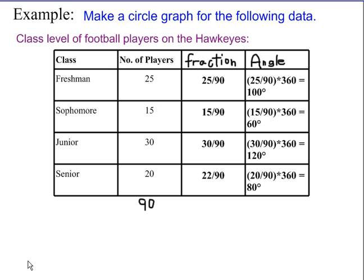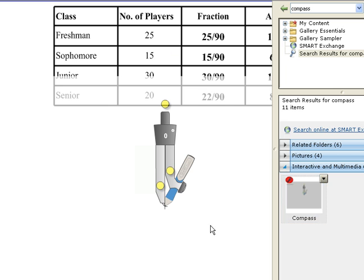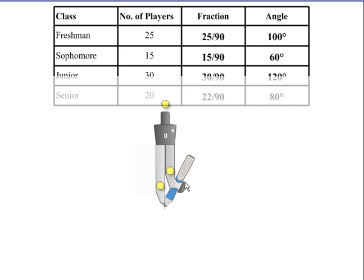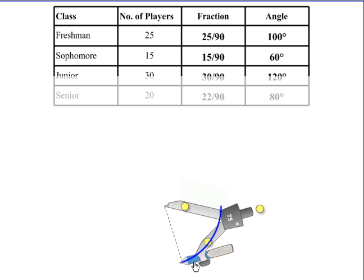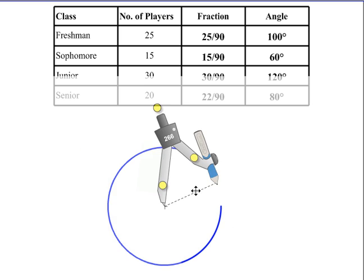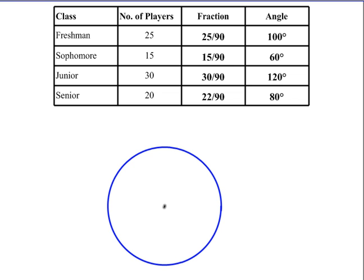Now I'm going to show you how to make the circle graph. The first thing I'm going to need is a compass. Now I need to draw my circle. I also need to mark the center point. Once you have your circle and your center point, the next thing you need is an initial radius so you can make your first angle. That's my first radius.